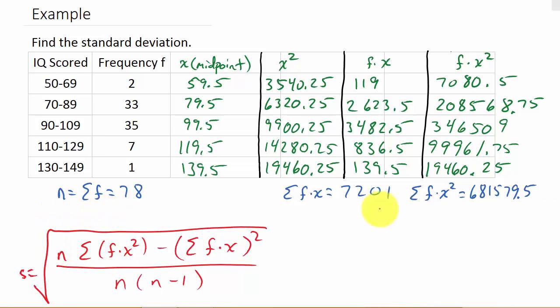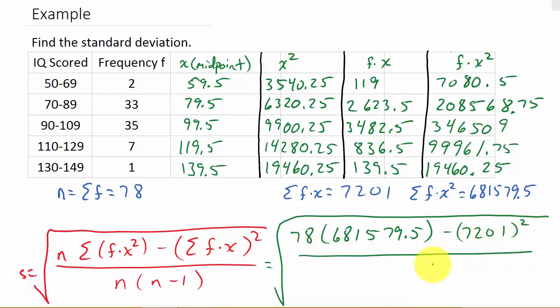All right. So, now, all we do is we plug these values into the formula. So, this is going to equal, n, which is 78, times the sum of f times x squared, which that's this number, 681579.5, minus the sum of f times x squared. So, the sum of f times x is 7201. And then, we square it over n, which is 78, times n minus 1.